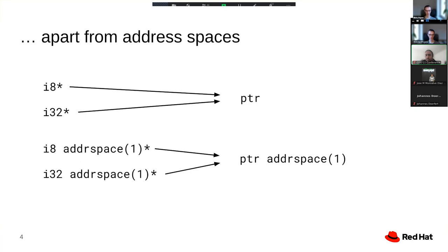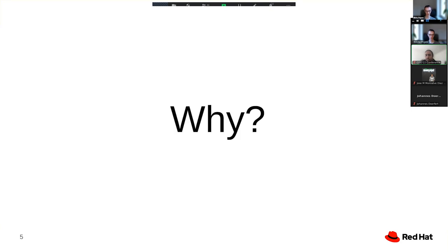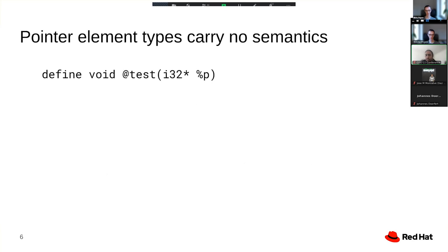This is a very major change to the LLVM IR design, which has taken a lot of effort to implement. So there should be some good motivation for why we are doing it. And the core motivation can be summarized like this: Pointer element types in LLVM simply do not carry any semantics, or at least they are not supposed to carry any semantics.